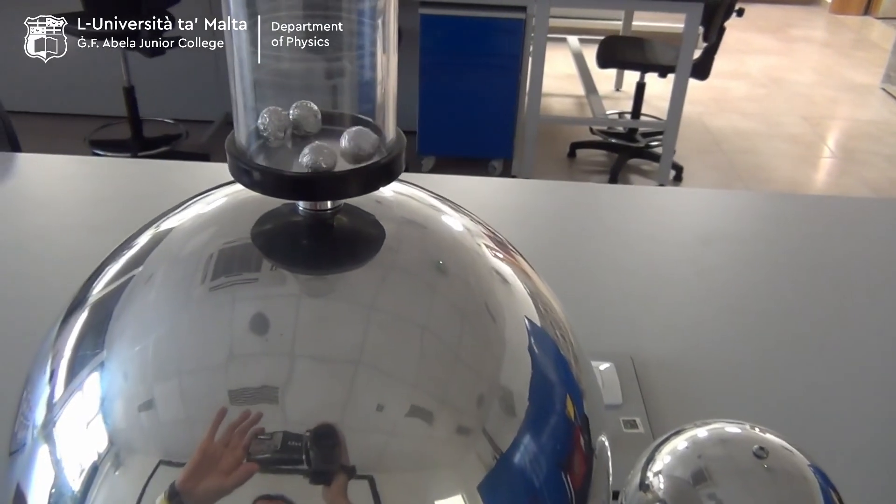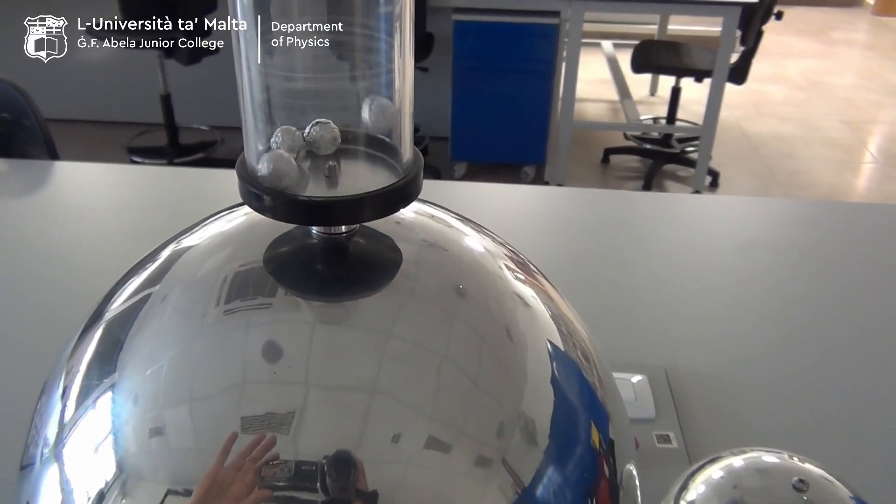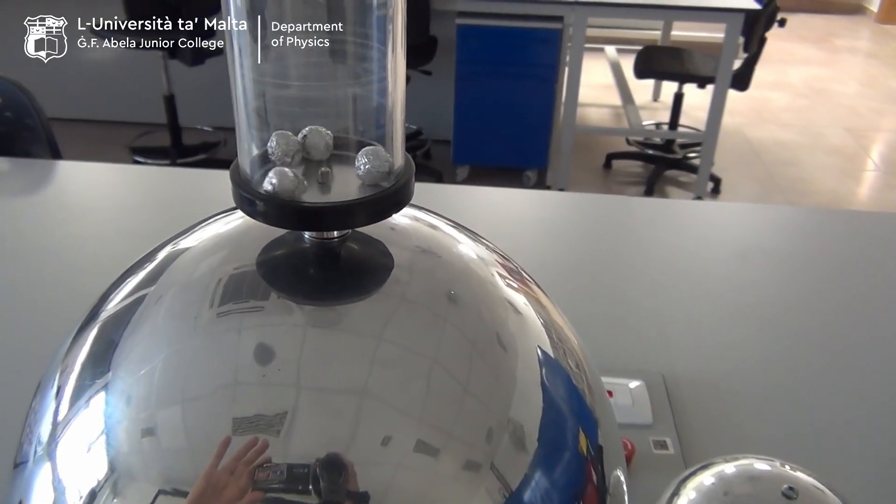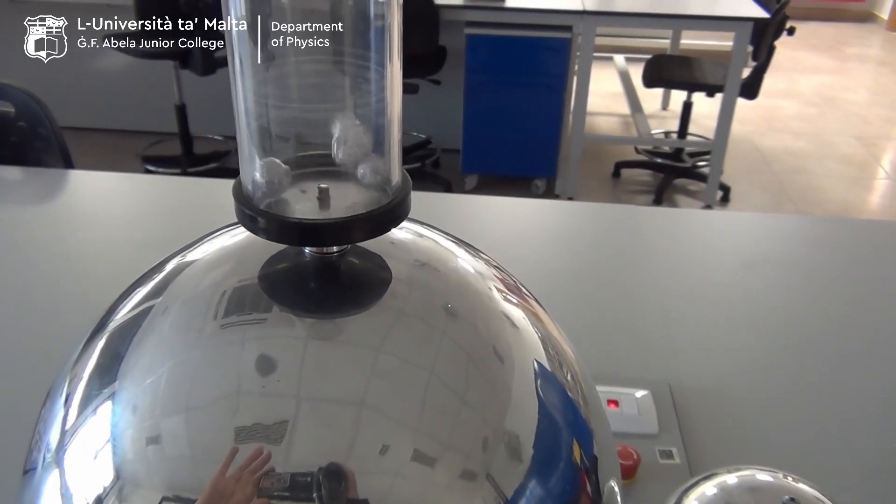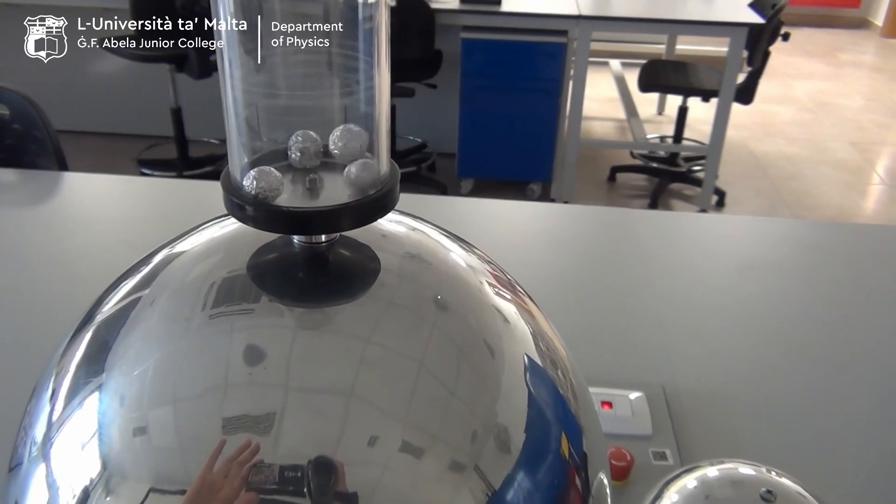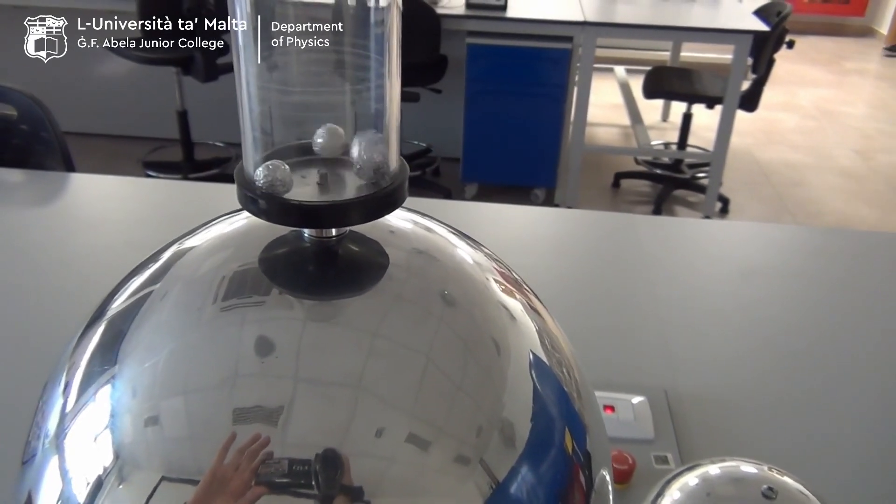The small spheres, conducting spheres, are being charged. As they charge up, they repel each other and bounce up. And then they fall down to become charged again and the cycle repeats.